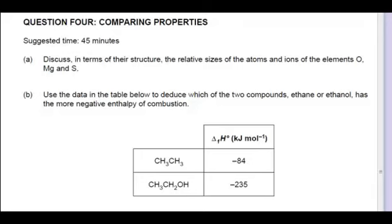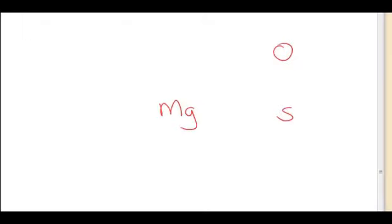So the first thing is to identify whereabouts they are in the periodic table. Now magnesium is in the same row as sulfur, so as we go across the only thing that's really changing here is more protons being added.